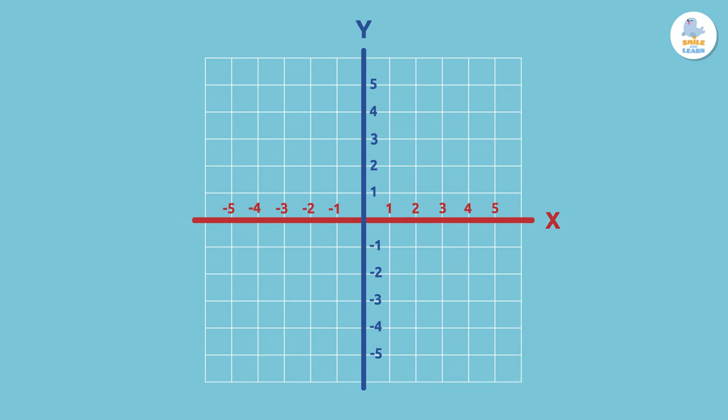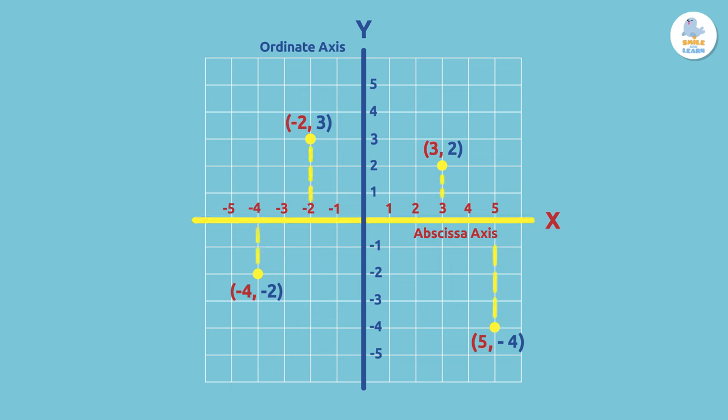The horizontal line is called the abscissa axis or x-axis, and the vertical line is called the ordinate axis or y-axis. Each point on the plane is represented by two numbers called an ordered pair. The first number corresponds to the horizontal coordinate or the x-axis, and the second number to the vertical coordinate or the y-axis.